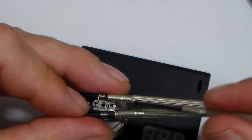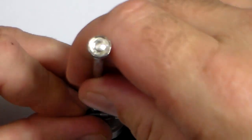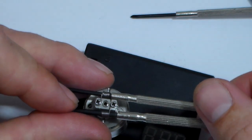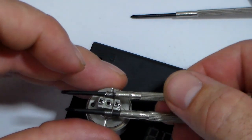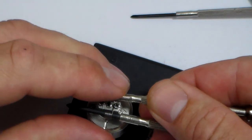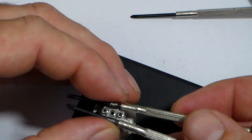Alright, there we go, we got the positive connection done. Now we just got to crank down the negative. There we go. Now what we got to do is just pull each coil up just a hair on each side.